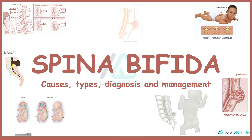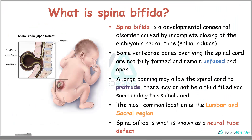Welcome to MedCrine. In today's tutorial we shall be looking at Spina Bifida. Spina Bifida is a developmental congenital disorder caused by incomplete closing of the embryonic neural tube of the spinal column. Some of the vertebral bones underlying the spinal cord are not fully formed and remain unfused and open. Therefore, a large opening may allow the spinal cord to protrude, and there may or may not be a fluid-filled sac surrounding the spinal cord.